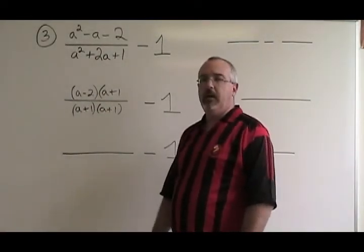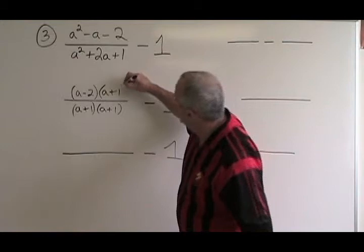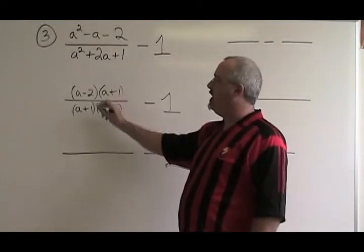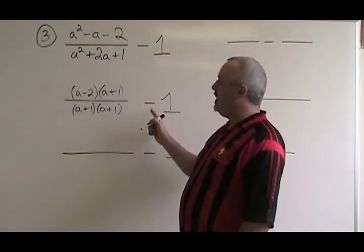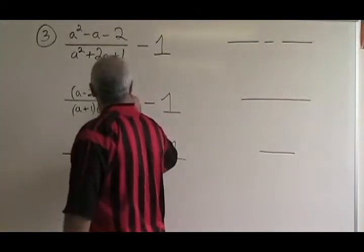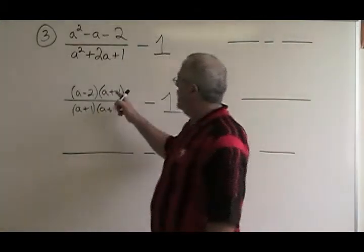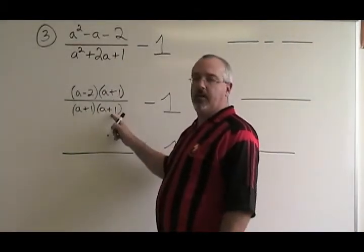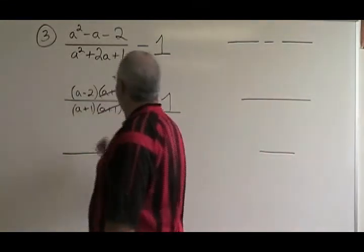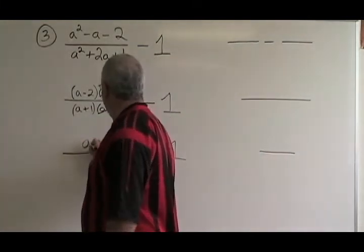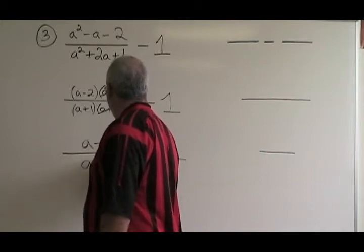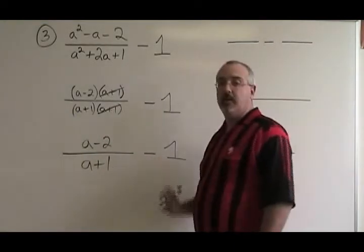Now, if we have an opportunity, we try to simplify the algebraic fraction before we bother with the subtraction. We have both a plus 1 on the bottom and the top, so we can cross them out. And we're left with a minus 2 over a plus 1 minus 1.